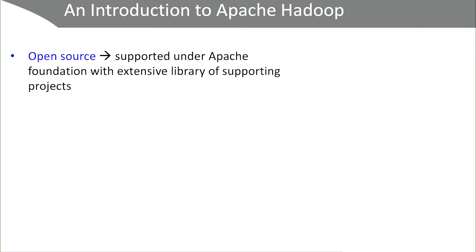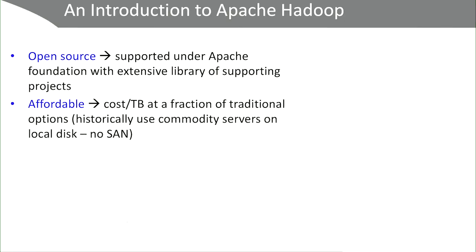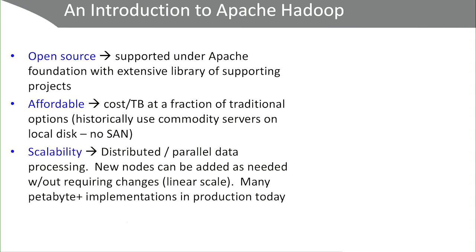Hadoop is popular for some very specific reasons. First, it is open source, which means you don't necessarily have to pay for it — though most people buy distributions like Cloudera or MapR. Being open source allows developers to create software hooks and applications that give it extra capabilities. It also tends to be more affordable because you can use lower-cost commodity servers to store and process data rather than very high-powered expensive servers. It is also very scalable — you can add parallel processing in almost linear scale, and if you start to run out of storage, just buy more servers and continue to increase performance and overall storage.